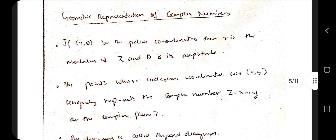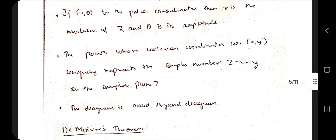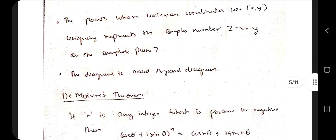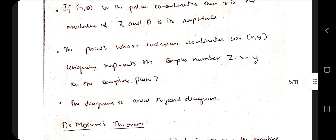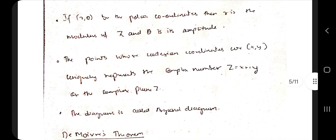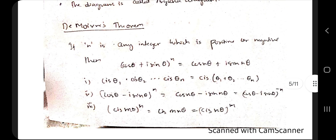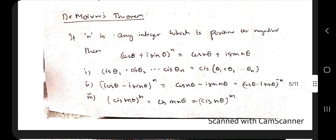For the geometric representation of complex numbers, the r-θ form means r is the radius and θ is the amplitude, so z = r∠θ. The same can be represented in x-y coordinate form. This diagram is called the Argand diagram.